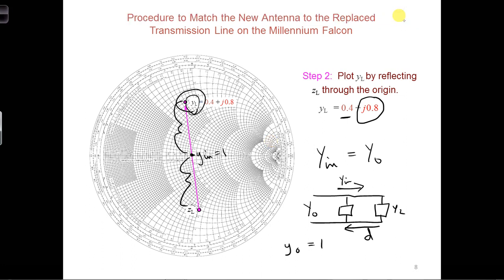A capacitor or an inductor only has an imaginary admittance, so it can only be used to cancel the imaginary part of the normalized load admittance, which in this case is 0.4 + j0.8. That means we'd be left with 0.4. Y_in would be equal to 0.4.